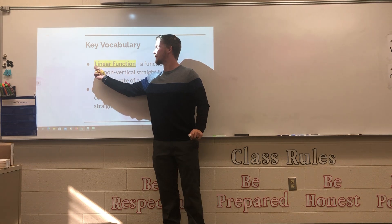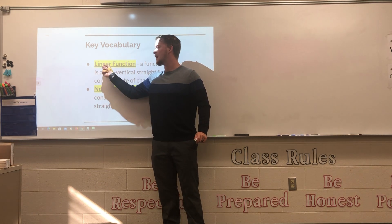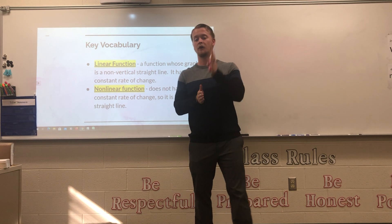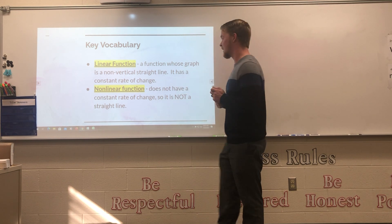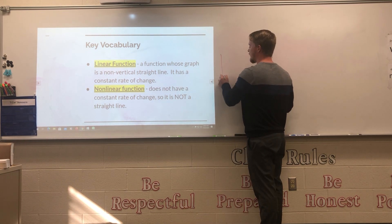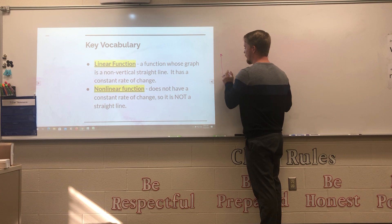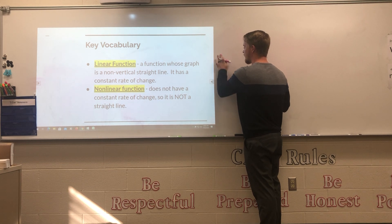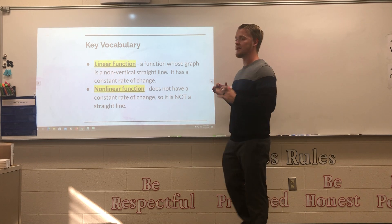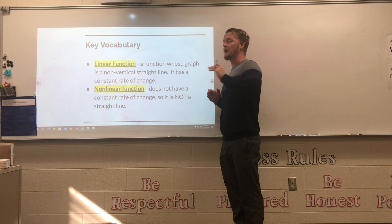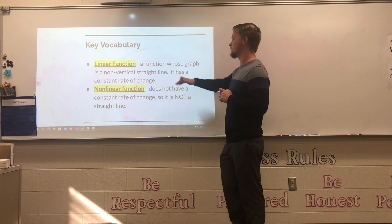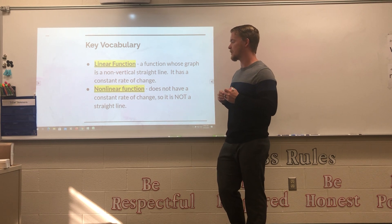The word 'linear' starts with L-I-N-E, hinting at 'line' — it has to be a straight line, but it cannot be a vertical straight line. So any straight line other than a completely vertical one is considered a linear function. This means it has a constant rate of change, meaning it goes up or down the same amount every time, which relates to slope.